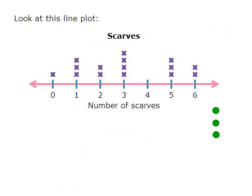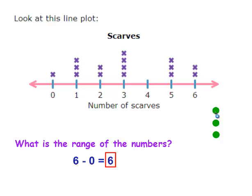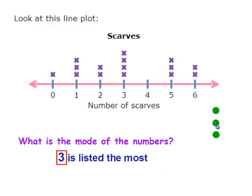Look at this line plot. What is the range of the numbers? You would take the biggest number and you would subtract out the smallest number. So the range of this line plot would be 6. What is the mode of this set of numbers? You can see that 3 is listed the most often, so 3 is the mode.